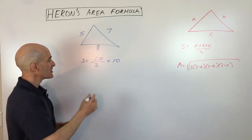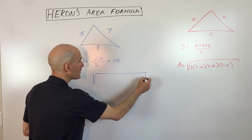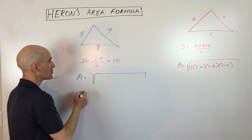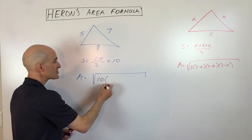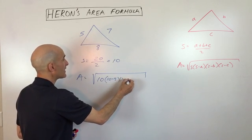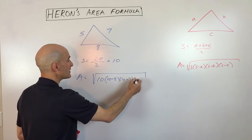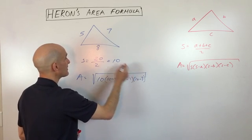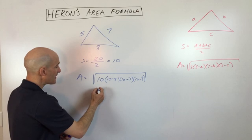So then what we're going to do is we're going to go ahead and put that into our area formula. So area of the triangle equals the semi-perimeter, which is 10. Then we have 10 minus five, that's this side, 10 minus seven, that's this side over here, and 10 minus eight, that's this side here.